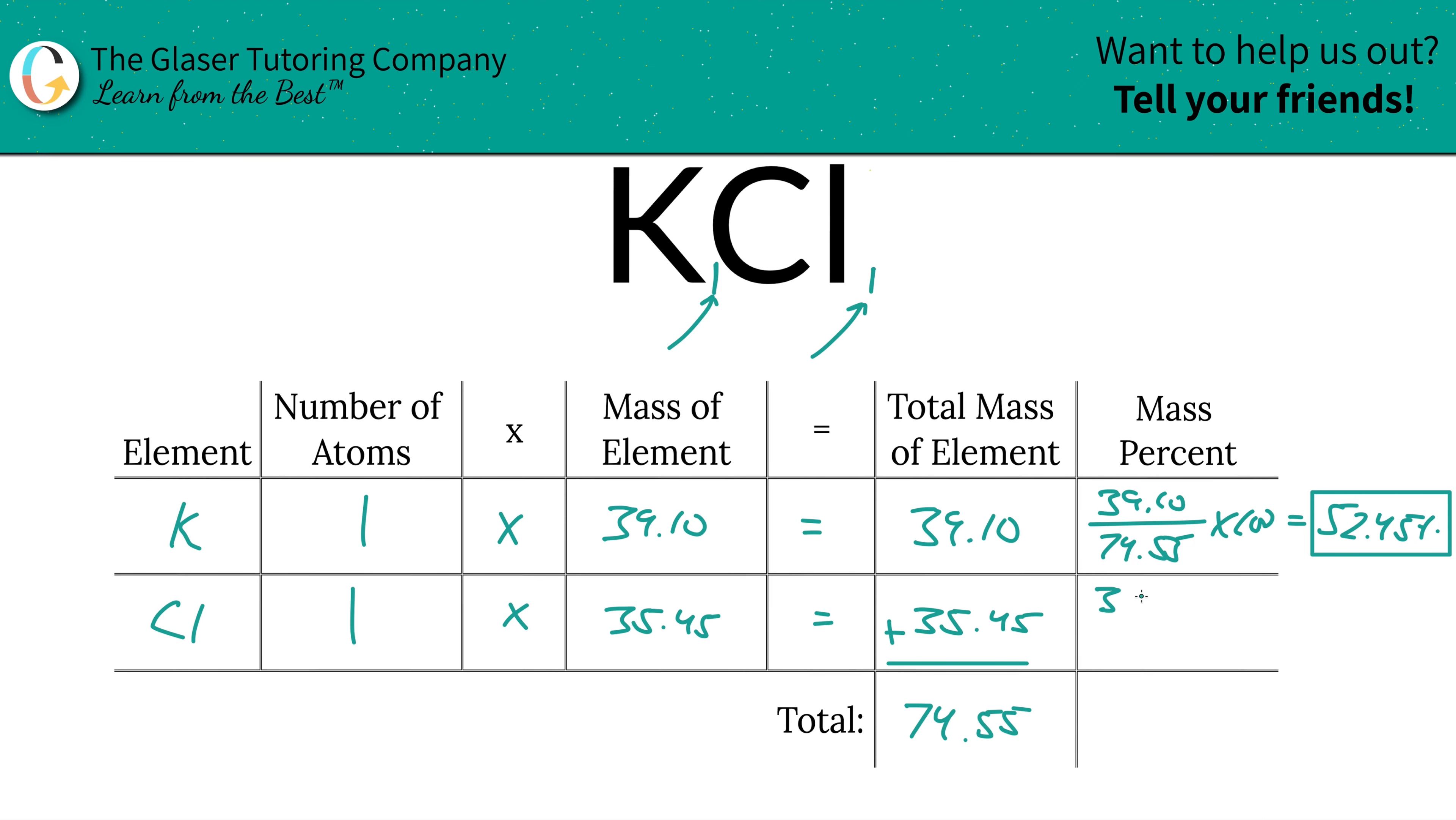So we take the total mass 35.45, divided by the total mass of the entire compound, 74.55, and multiply it by 100. That's a simple percent calculation, right? Part over whole times 100. The units will cancel here. So who cares? Don't worry about gram per mole. It doesn't really make a difference. So now it's going to be 47.55%.